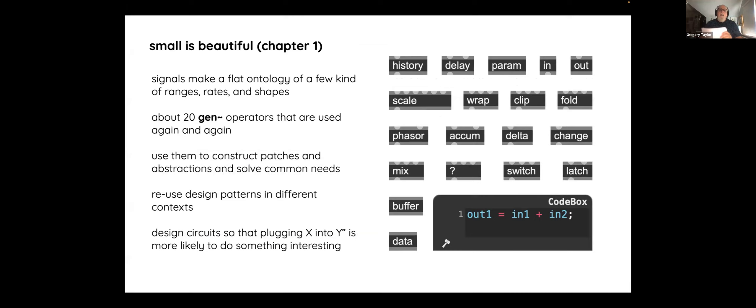The first insight of the book is 'small is beautiful.' Everything in Gen is one sample, flying by at scary rates of speed — that's overwhelming. But it's not once you think about the kinds of single samples, their ranges, their rates, their shapes, and what they do. We run down a sort of bestiary of what those signals are. The number of Gen operators we use in this book is remarkably small — a large part of the book uses nothing but a small set of objects.